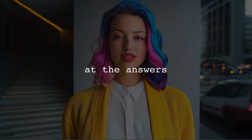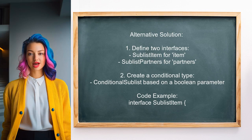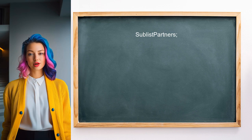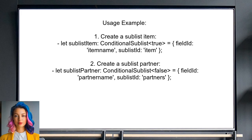Now let's look at the answers provided by other users. An alternative solution involves using conditional types in TypeScript. They define two separate interfaces — one for sublist items and another for sublist partners — then create a conditional type that selects between these two interfaces based on a boolean parameter. For instance, creating a sublist item with the field ID item name and a sublist partner with the field ID partner name. This approach effectively handles the conditional logic within the TypeScript type system.